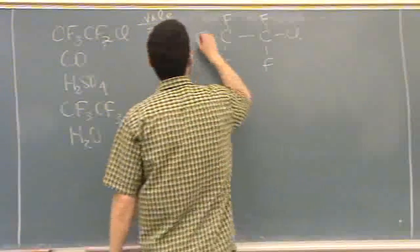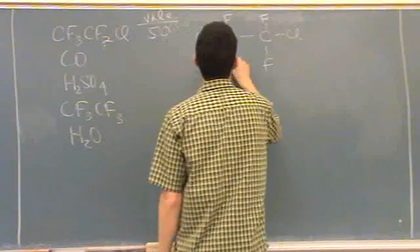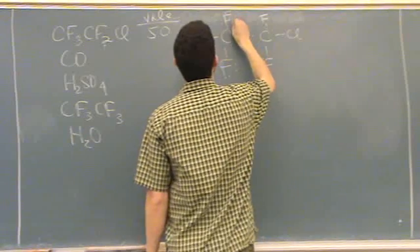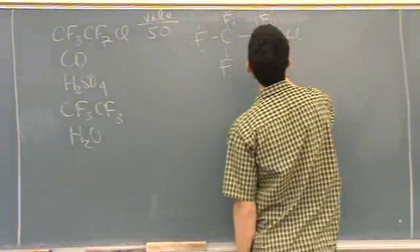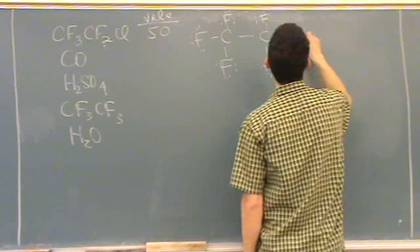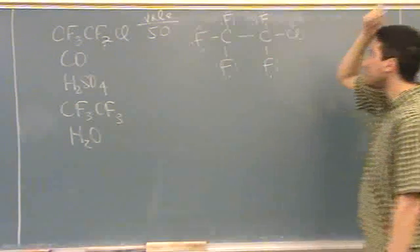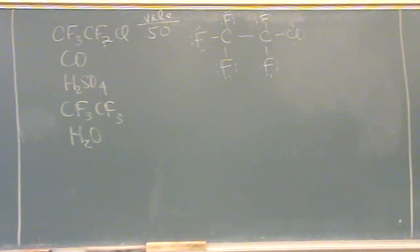Now let's put it in lone pairs. [Counting from 14 to 50 by twos as lone pairs are added to each halogen]. Did I count that right? I must have missed one. That adds up to 50. Is that okay? So there you go, that's it. Everything has an octet.